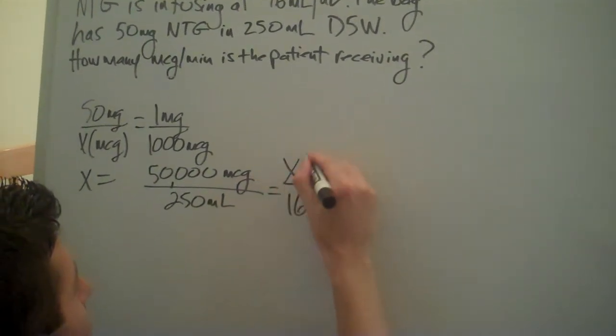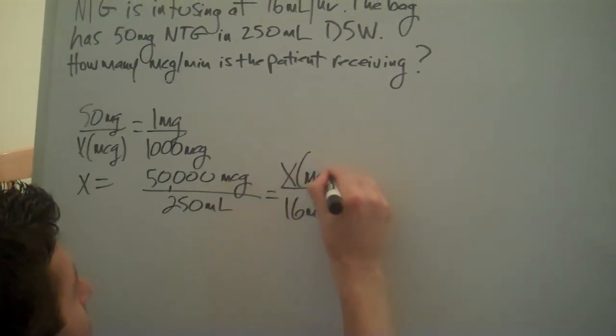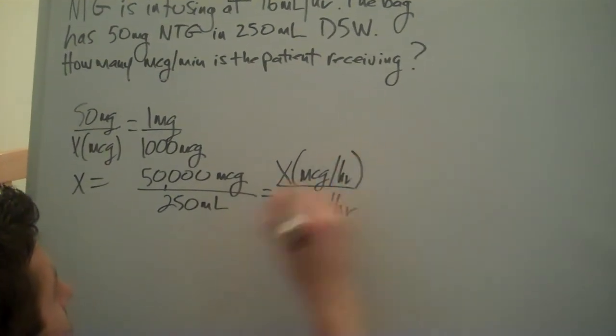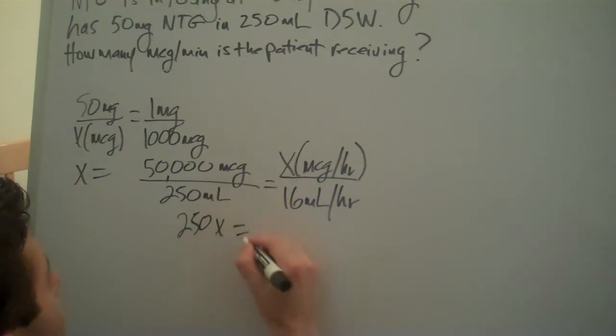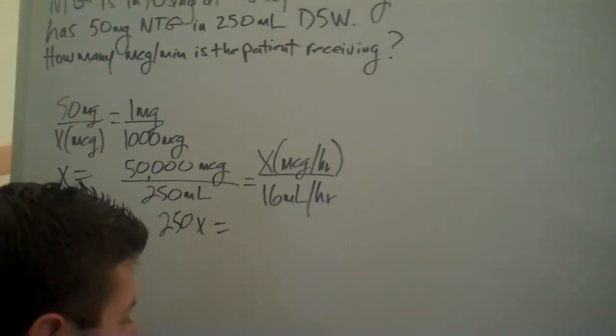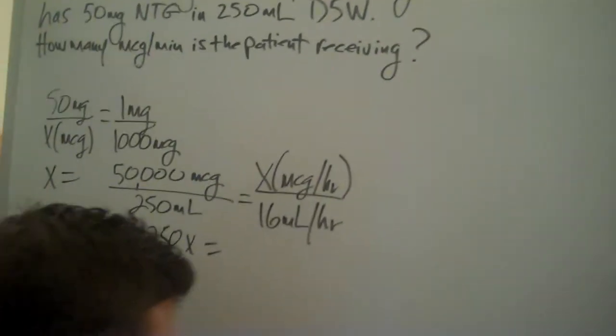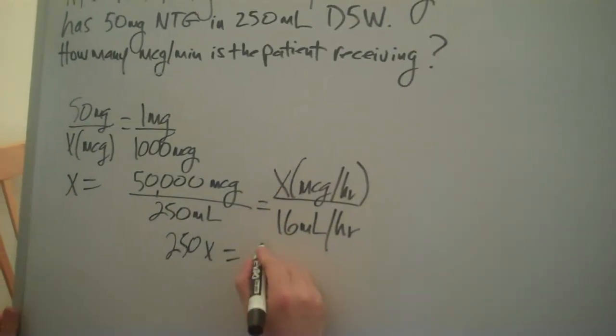And we're looking for x. And we're going to cross multiply. 50,000. Let's see here. I've got to use my trusty calculator. And we're going to get 800,000.